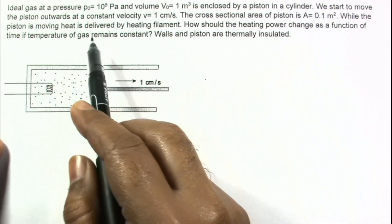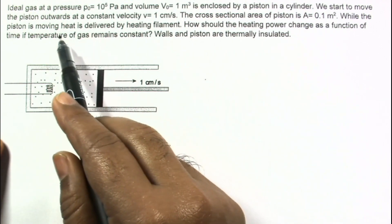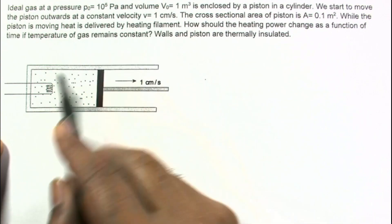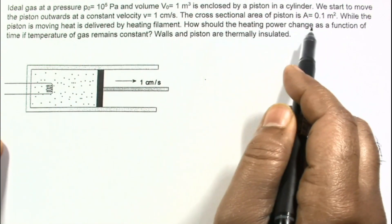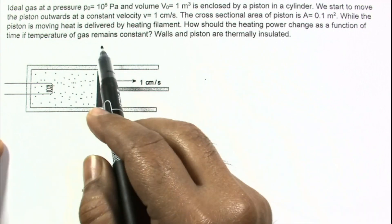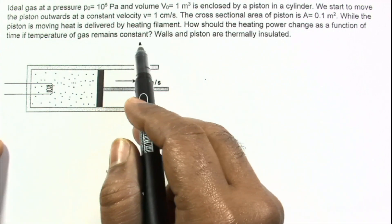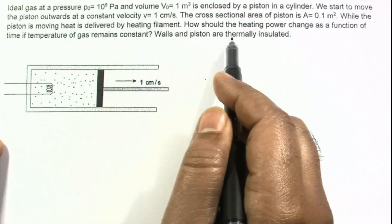While the piston is moving, heat is delivered by this heating filament. How should the heating power change as a function of time if temperature of gas remains constant? Walls and piston are thermally insulated.